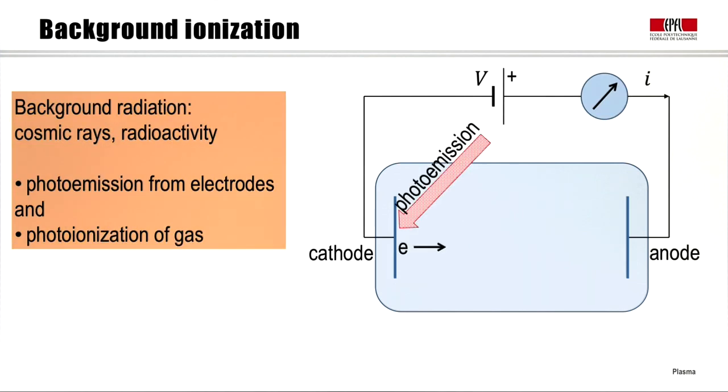The answer to this is that there is always background radiation on Earth, coming from cosmic rays or radioactivity in the environment. These rays or radioactivity can cause photoemission from the cathode or photoionization in the gas, and these release electrons which travel in the electric field from the cathode to the anode.